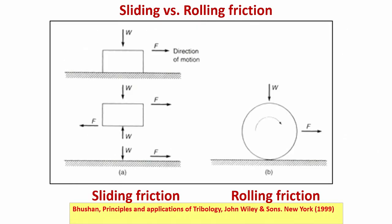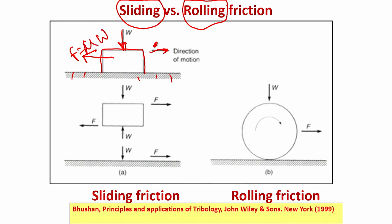Let me start with this slide where I have shown the two major types of friction: sliding friction and rolling friction. Sliding friction is where you have a solid sliding against a nominally flat surface. Once you pull it, the direction of motion is v, and the frictional force F = μW acts in the opposite direction.